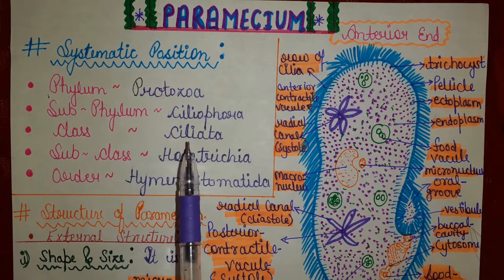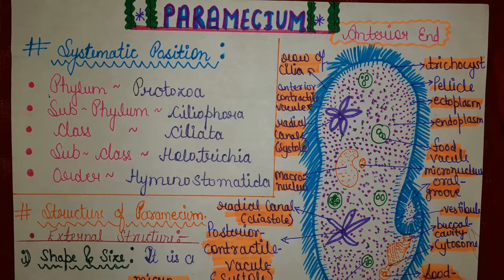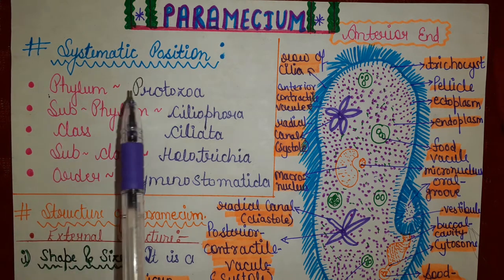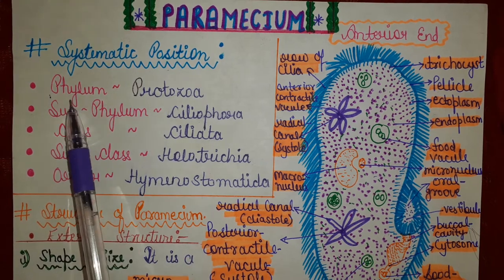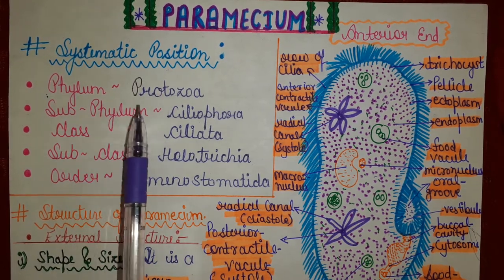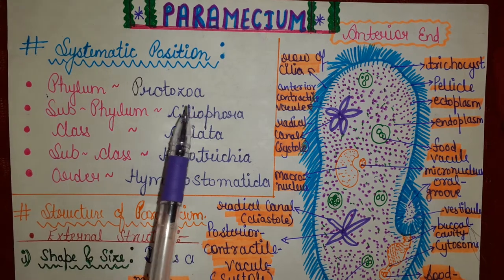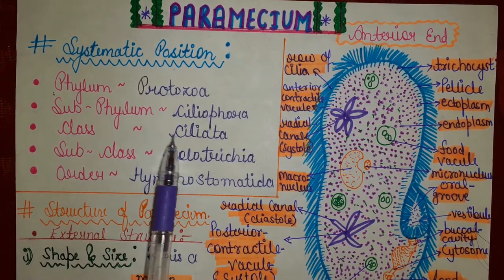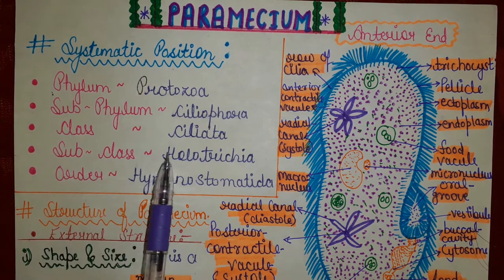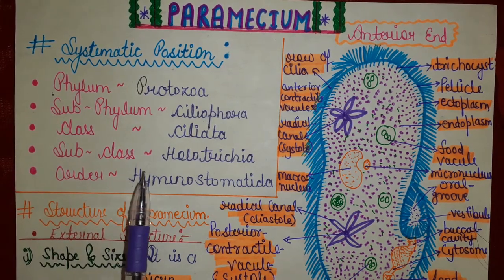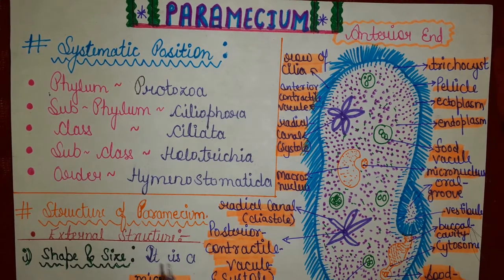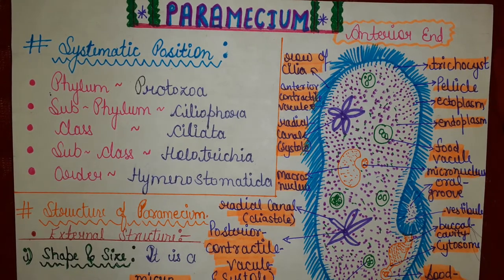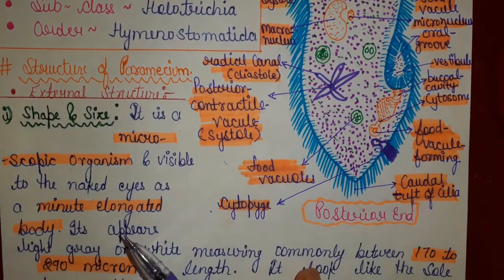Now we will study their systematic positions. The structure of Paramecium is divided into two parts: external structure and internal structure. The systematic position is: Phylum - Protozoa, Subphylum - Ciliophora, Class - Ciliata, Subclass - Holotricha, Order - Hymenostomatida. This is our Paramecium's systematic position.